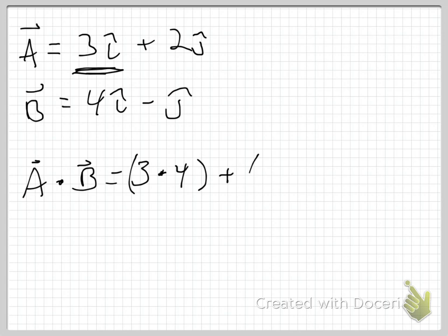And then plus A sub Y, which is 2, times B sub Y magnitude, which is minus 1. So I get 3 times 4 is 12. 2 times negative 1 is minus 2. So I get 12 minus 2, which is equal to 10. So whatever units I have there. That's my dot product, A dot B.